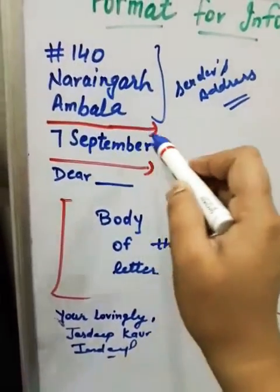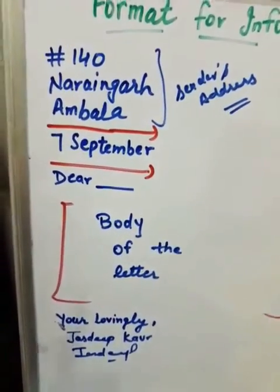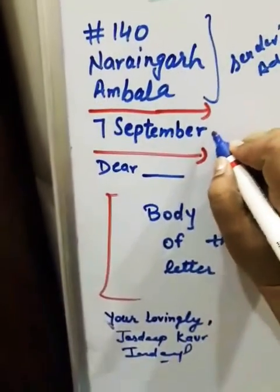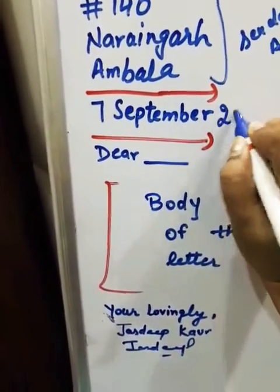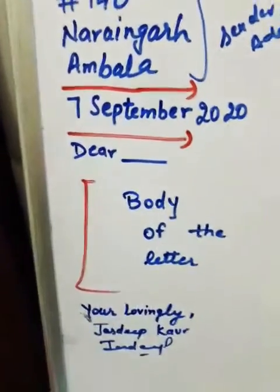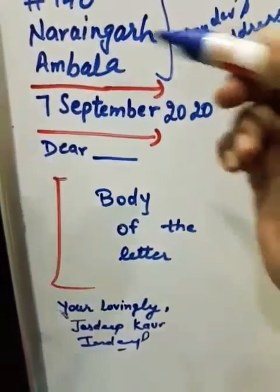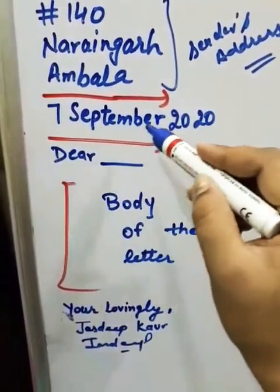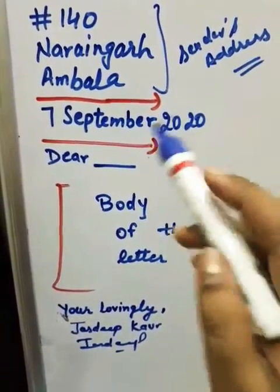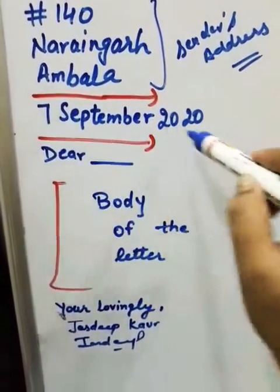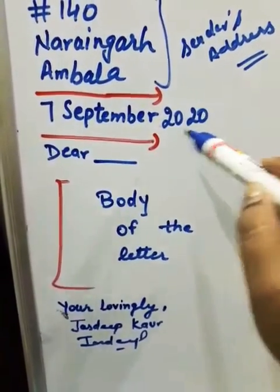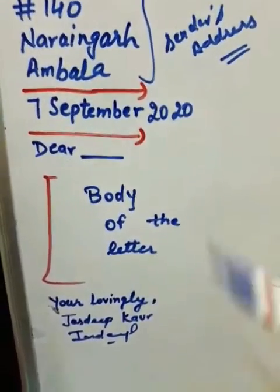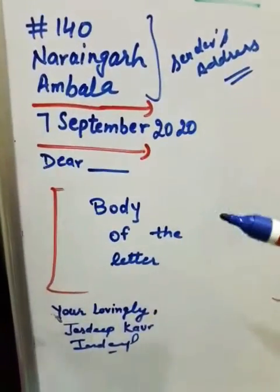Then you will leave one line, then the date. Remember, the full date will come — for example, 7 September 2020. After the date, leave one line.